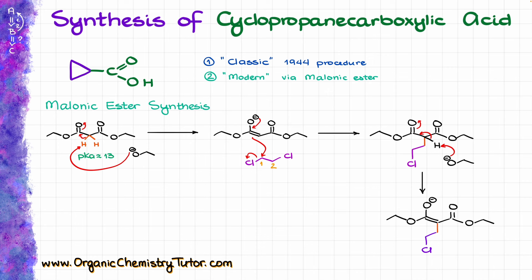Here we have the same situation as in the previous reaction: the acid-base step happens faster than nucleophilic attack on the electrophilic carbon bearing the chlorine. We expect formation of the enolate to be much faster than nucleophilic attack from the oxygen onto that carbon displacing the chlorine — that doesn't happen much. But just like in the previous case, as soon as we form our enolate, the intramolecular reaction does its magic and immediately closes our molecule into a three-membered ring, like this. We've got our three-membered ring.